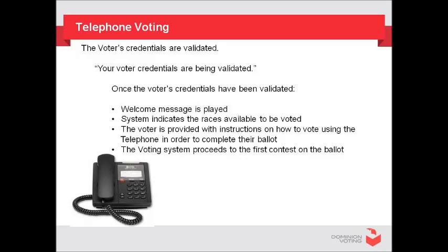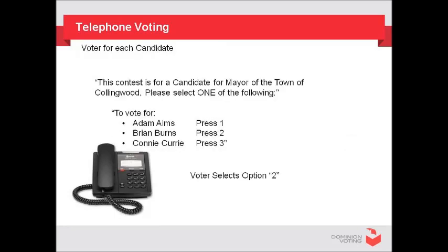The voting session proceeds to the first contest on the ballot. You will hear a series of instructions for each contest. For example: this contest is for a candidate for mayor of the town of Collingwood. Please select one of the following: to vote for Adam Ames, press 1; Brian Burns, press 2; Connie Curry, press 3. In this example, the voter selects option 2.